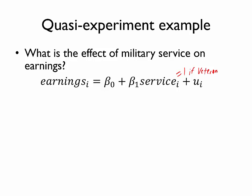So the estimated beta 1 would represent the difference in average earnings between veterans and non-veterans. So certainly that difference could reflect the causal impact of military service, but it could also reflect the effect of numerous other things.